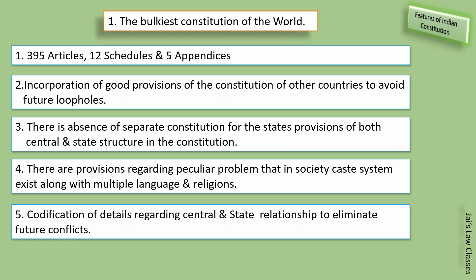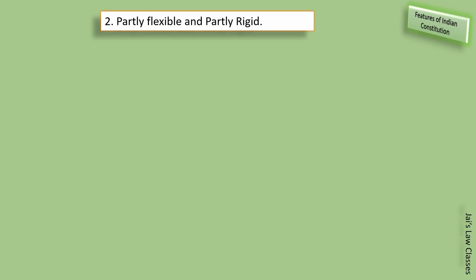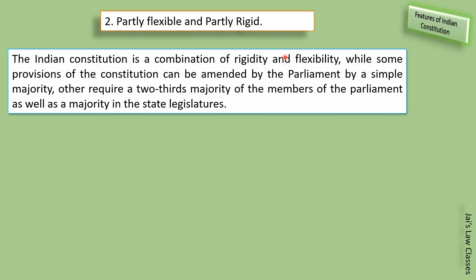So now we know why this constitution is so bulky. The second feature of the Indian Constitution is that it is partly flexible and partly rigid. It is a combination of rigidity and flexibility — some provisions can be amended by parliament by a simple majority, while others require a two-thirds majority of parliament as well as a majority in state legislatures.